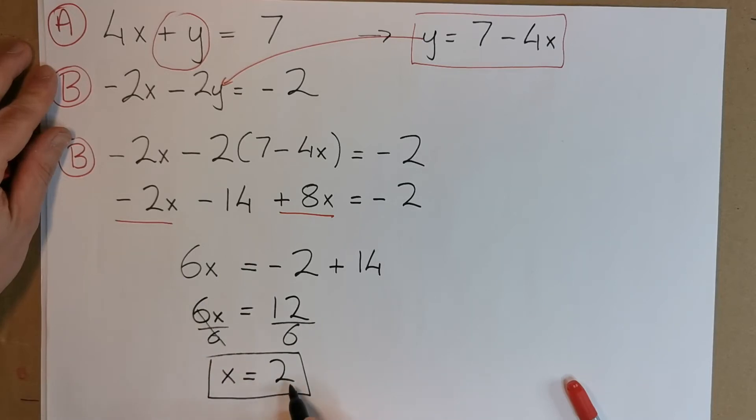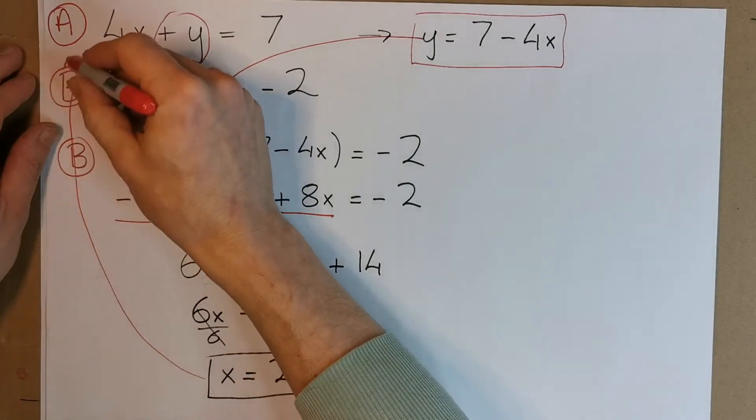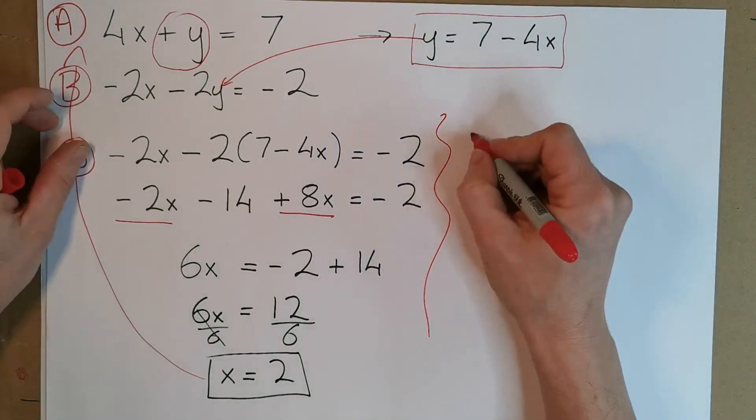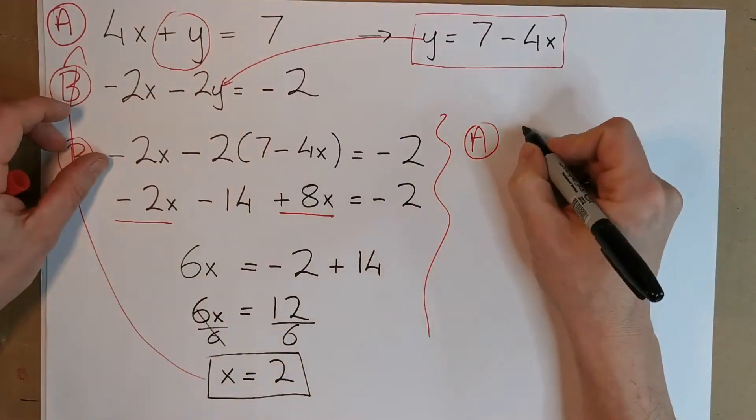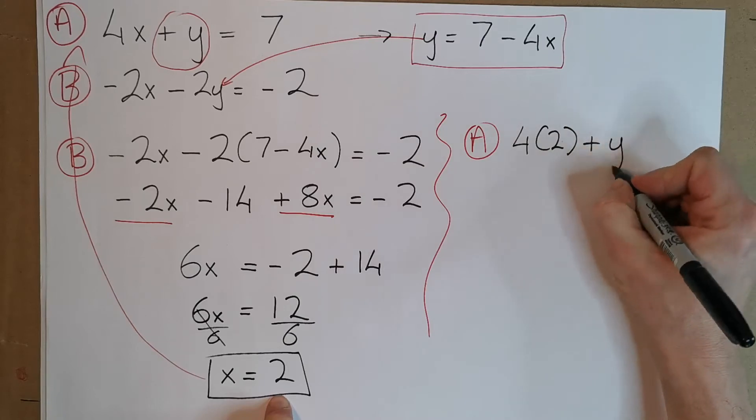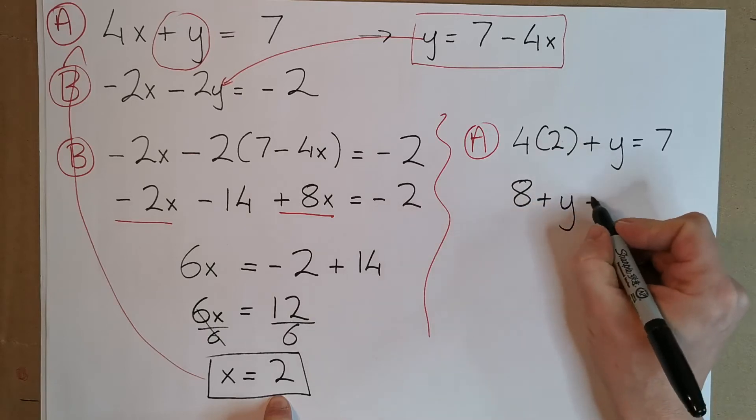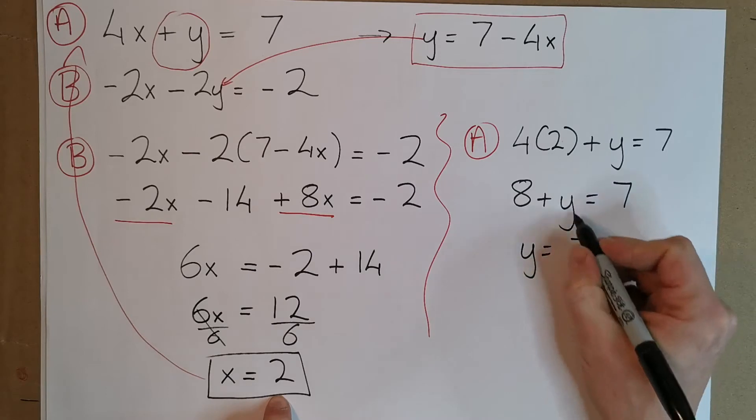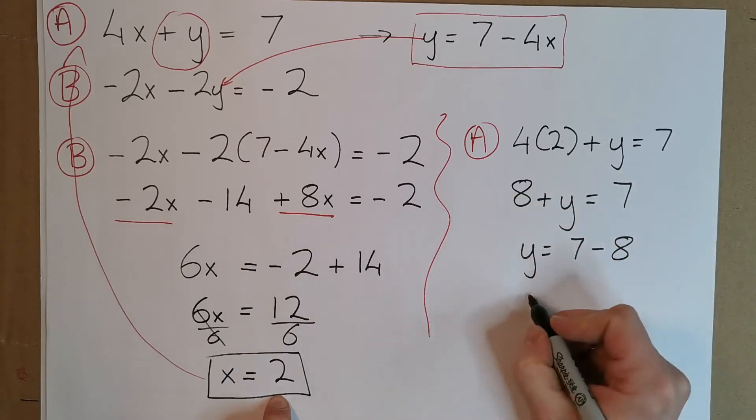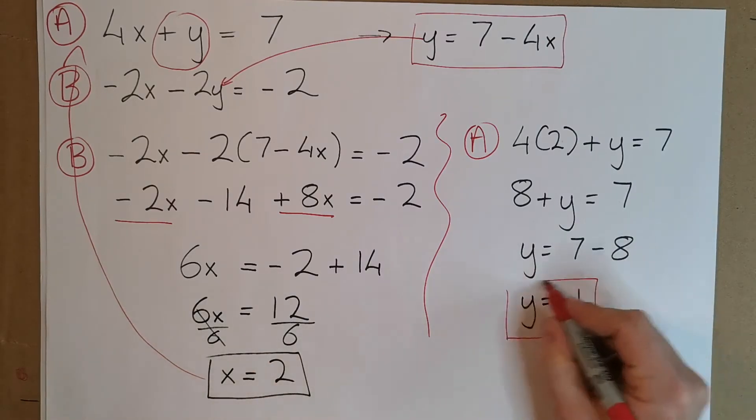So we've actually got a solution for x, and we can actually put this solution back into one of the original equations. When we get our solution for a variable, we'll put it back into one of the originals. So let's put this x value of 2 back into equation A. We're saying 4 times, now instead of x, we're going to use now the value 2. And we're going to say plus y is equal to 7. 4 times 2 is 8. Plus y is equal to 7. Therefore y must be equal to 7. And we bring over this 8, it becomes a minus 8. And y is equal to minus 1. So we have our value for y, and we have our value for x.